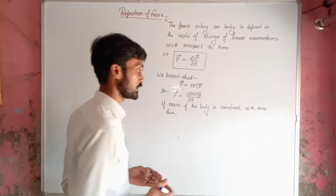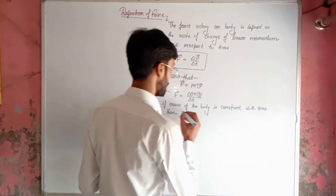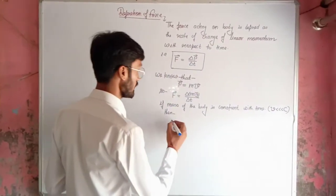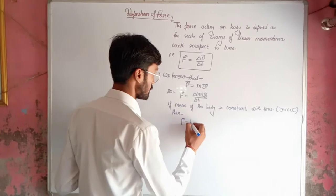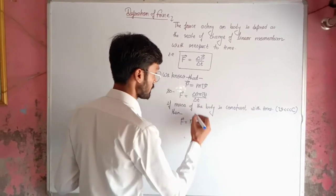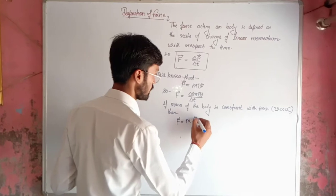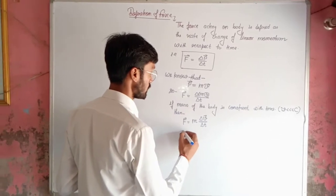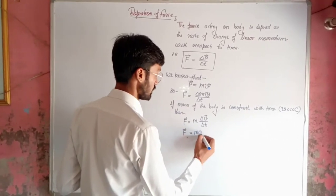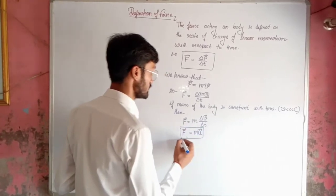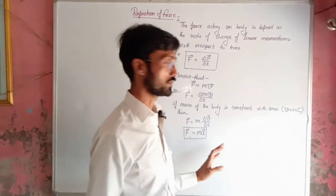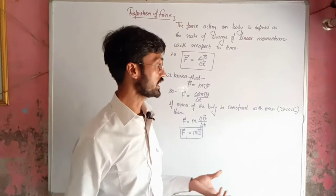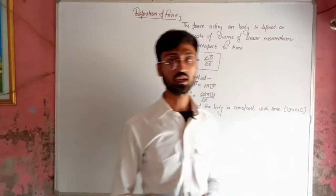When v is very very less than the speed of light, that means v is very very smaller than the speed of light, then F will be equal to mass times delta vector v divided by delta t, which is nothing but the acceleration of the moving object. So you can see here this form is valid only for objects whose velocity is very very smaller than the speed of light; otherwise this form is not valid.